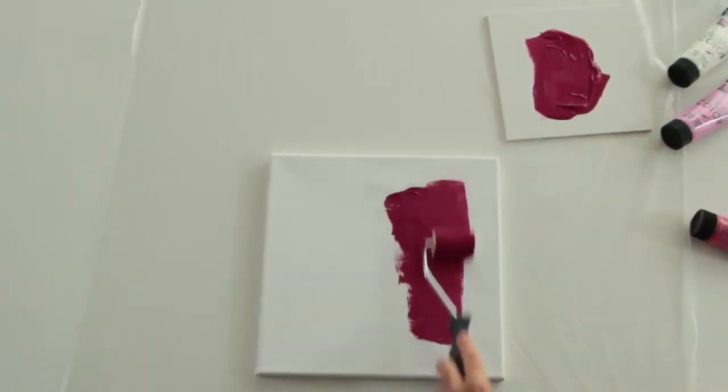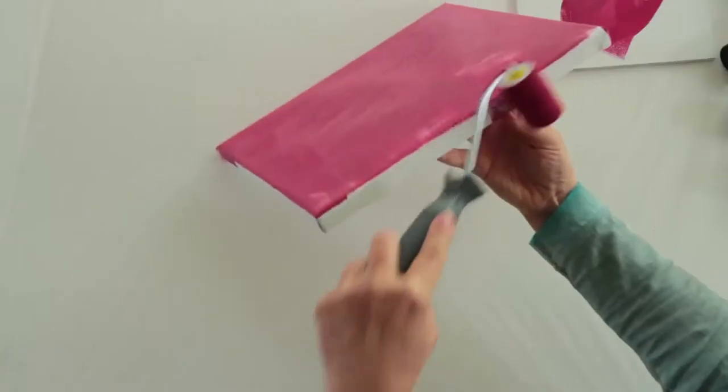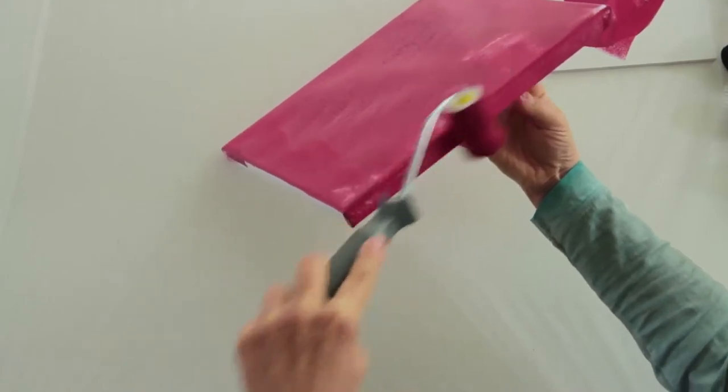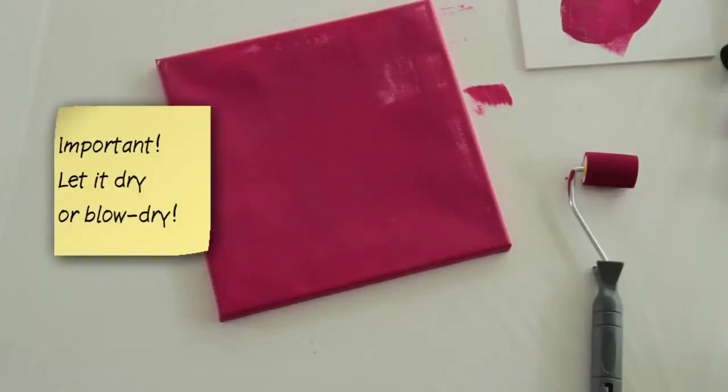prime the entire surface of the canvas frame with acrylic color using the paint roller and then paint the edges. Leave the primed canvas frame to dry or blow dry until it is bone dry.